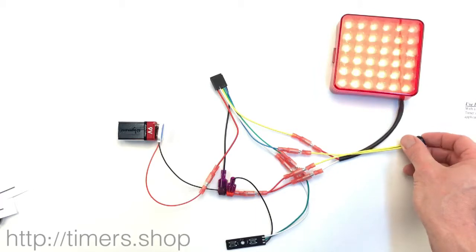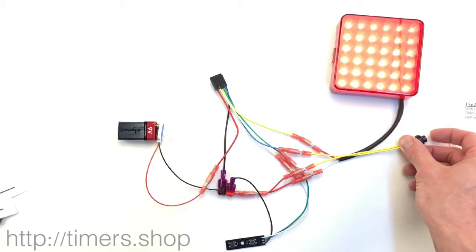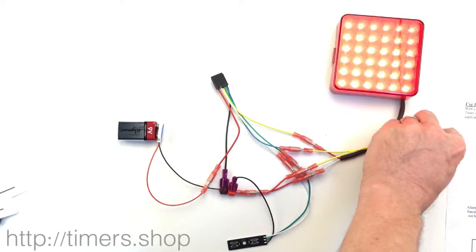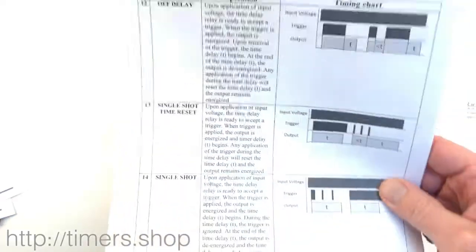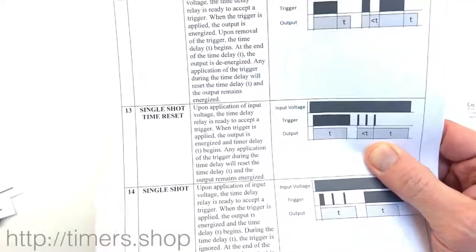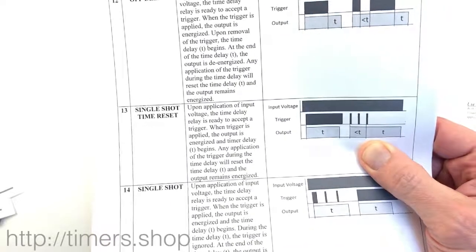Now if I'm going to push the button every second, then it's going to stay on because function 13 resets the time every time we push the button. The trigger becomes active.